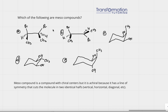A meso compound is a compound that has chiral centers but is achiral because it has a line of symmetry. The line of symmetry is a line that cuts the molecule into two identical halves, and this line can be vertical, horizontal, or diagonal, so we have to look carefully.